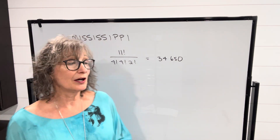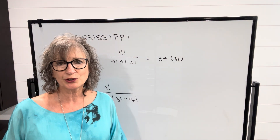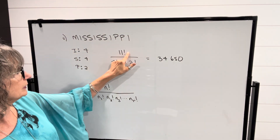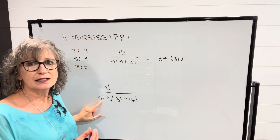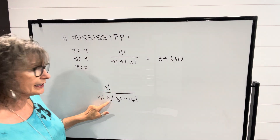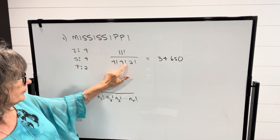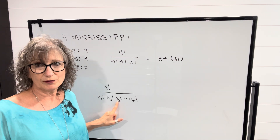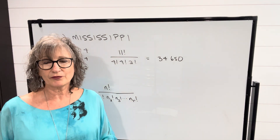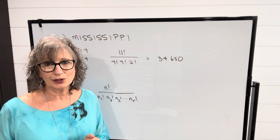So that's how you deal with permutations when you have one or more items that are repeated. If you want a formula, the number of permutations equals n factorial divided by n₁ factorial times n₂ factorial and so on, where n is the total number of items, and n₁, n₂, etc. represent the number of times each repeated item appears. For Mississippi, n was 11, n₁ was 4 for I, n₂ was 4 for S, and n₃ was 2 for P. If an item only appears once, you don't need to include one factorial in the denominator because one factorial is simply one.